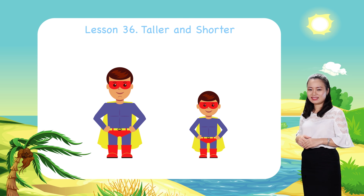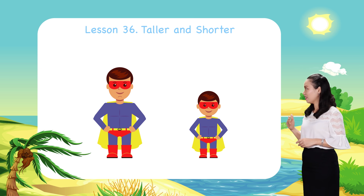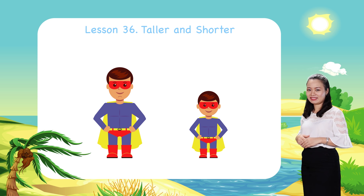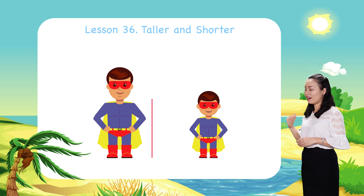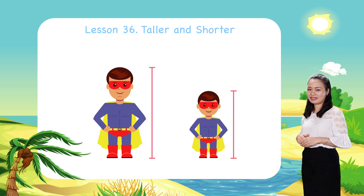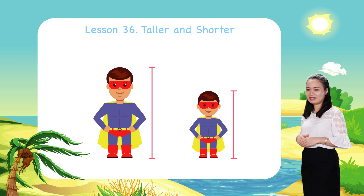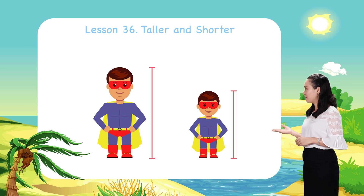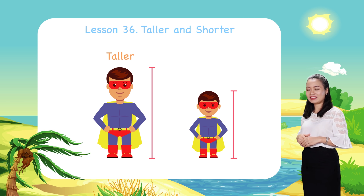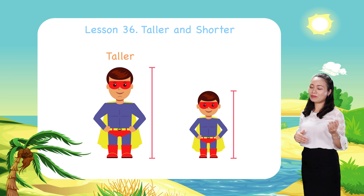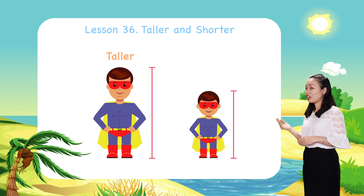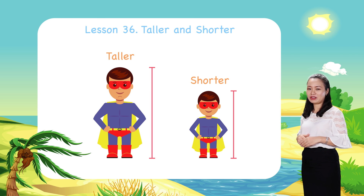Look, this is the father and this is the son. This is the father's height. This is the son's height. These heights are not equal. So we say the father is taller than the son, or the son is shorter than the father.